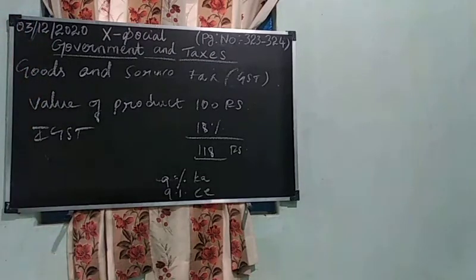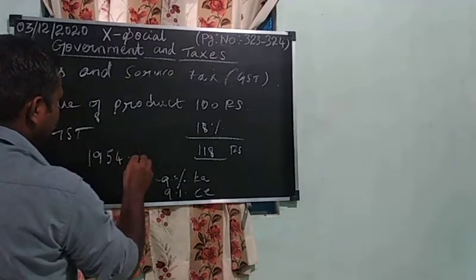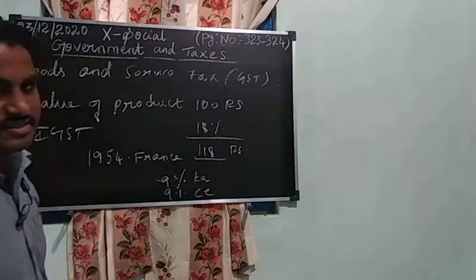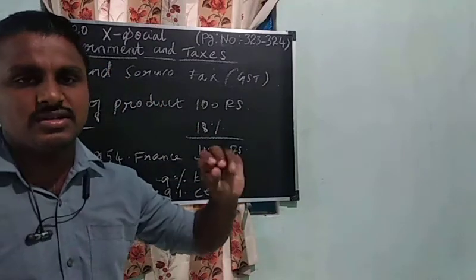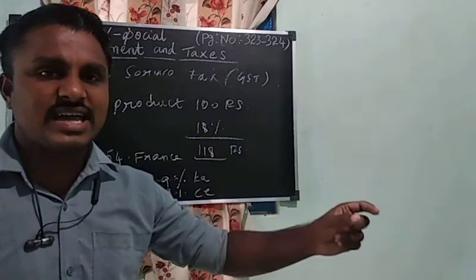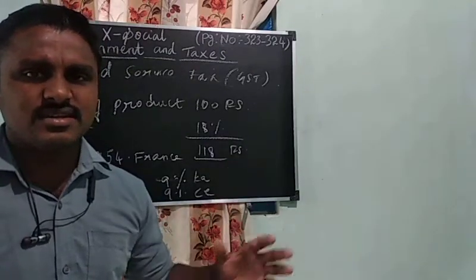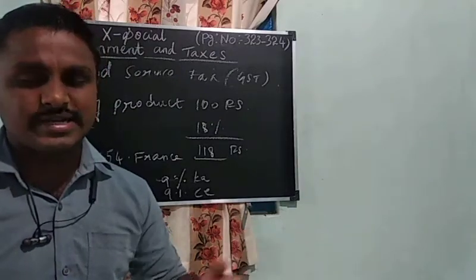GST was first implemented in France in 1954. To summarize: taxes are divided into two types — direct taxes and indirect taxes. Direct taxes include income tax, wealth tax, and corporate tax.